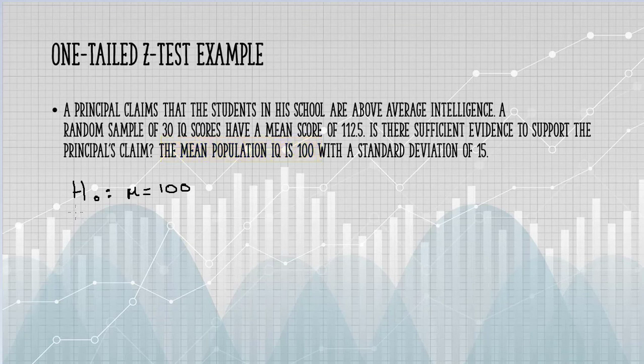The alternate hypothesis is the theory we're testing, the principal's claim. He claims that the mean is greater than 100, so we would write that as μ > 100.